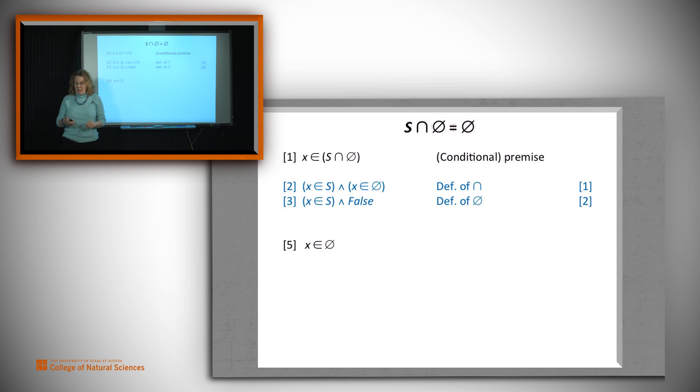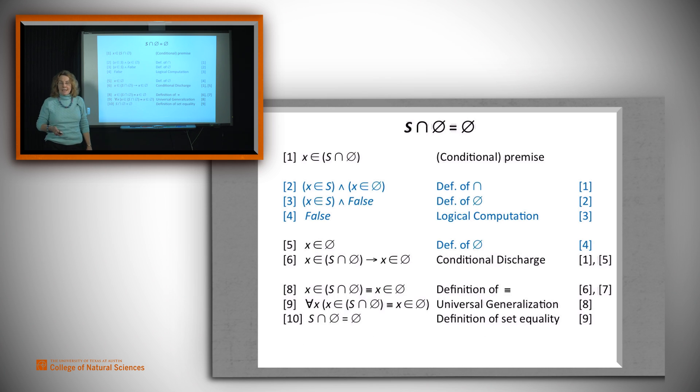Now we need to actually do some logical reasoning. And we simply do computation, right? Anything and false is false. That's standard logical computation. And now we know how to go from four to five. It's that we use the definition of the empty set. So we've now filled in the guts of our proof. We add the rest of it and we're done.